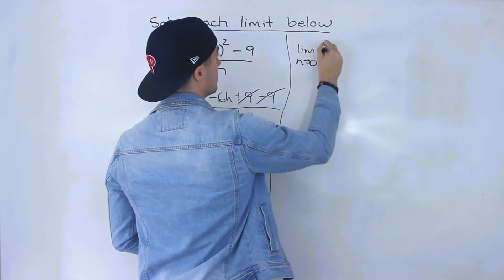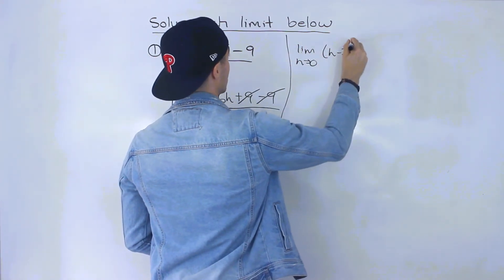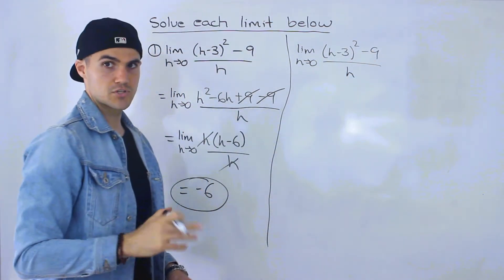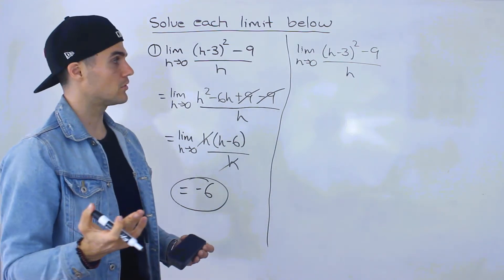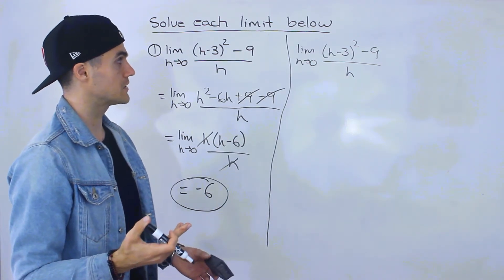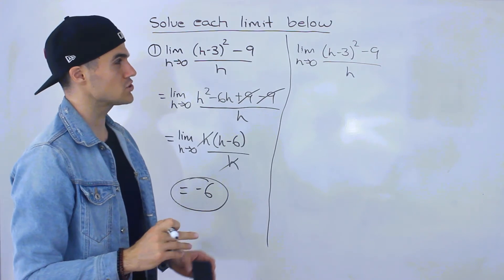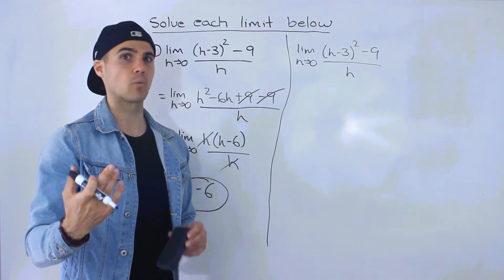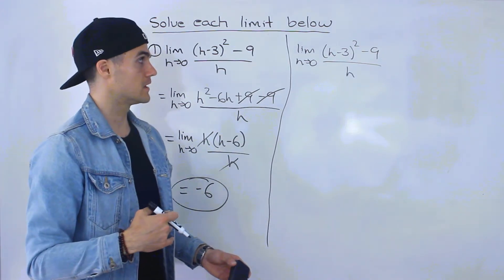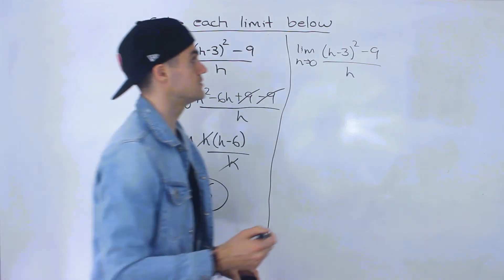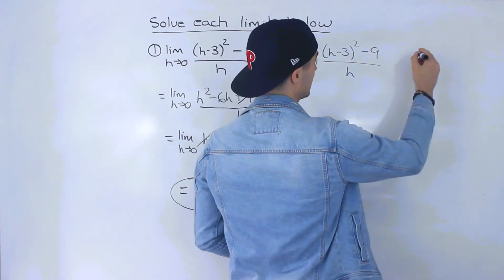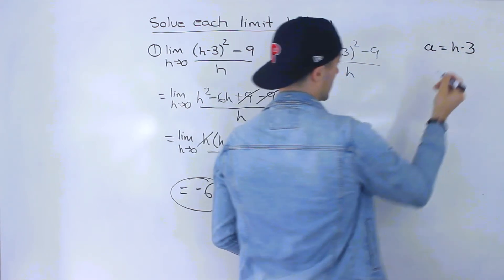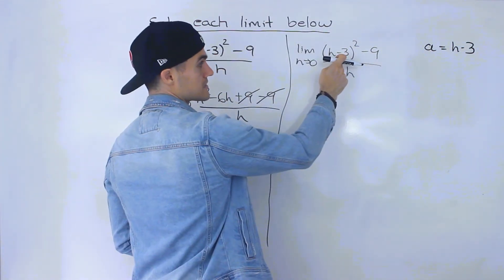So limit as h approaches 0 of h minus 3 to the power 2 minus 9 all over h. So I'm assuming that you watched my change of variable videos where you have to solve limits and usually we're doing a change of variable when there's a rational exponent right like 1 over 3 for example. But you can do a change of variable here. The way you do that is we're going to let a equal h minus 3. Right we're going to let a equal this here.